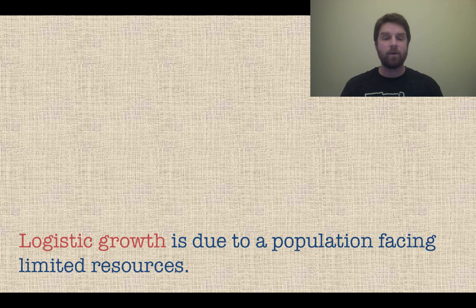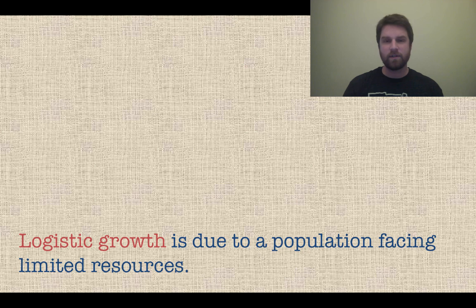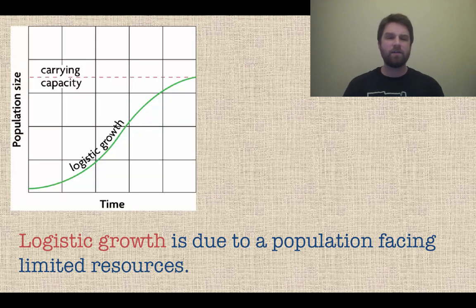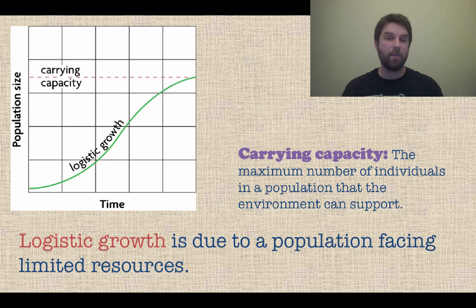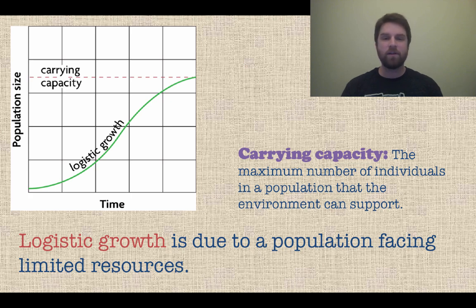The other type we're going to look at is logistic growth. This is a type of growth that will grow very quickly and then face some limited resources and taper off. Looking at this graph, you can see over time there is a period of slow growth, then an exponential period of growth, and then the population size levels off until it reaches what's known as the carrying capacity — the maximum number of individuals that the environment can support.